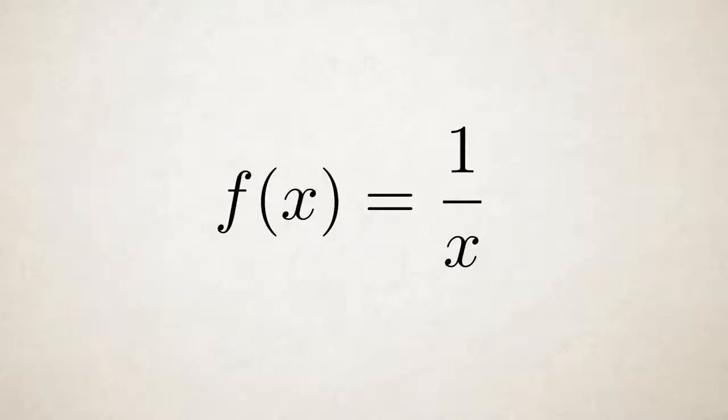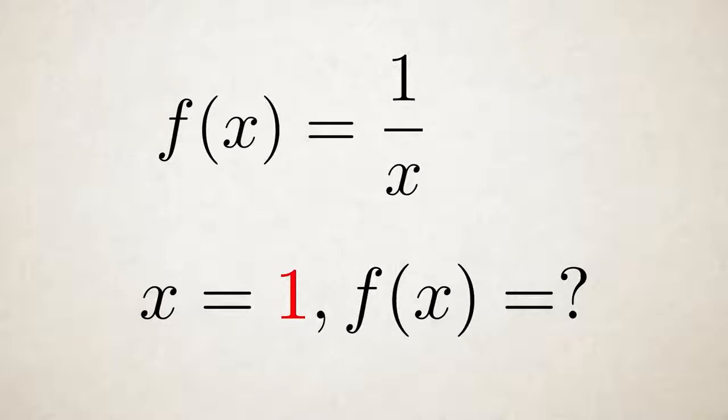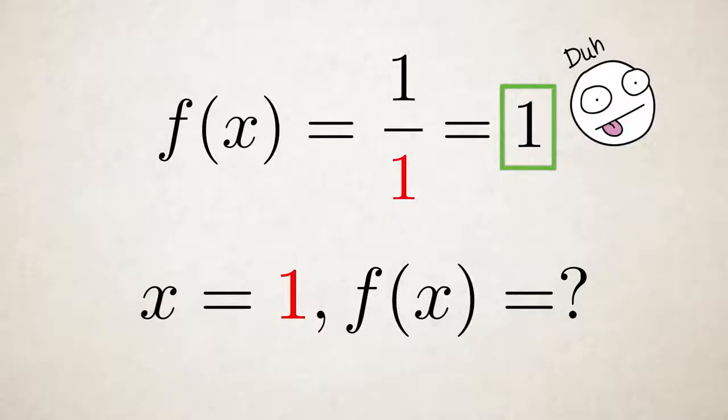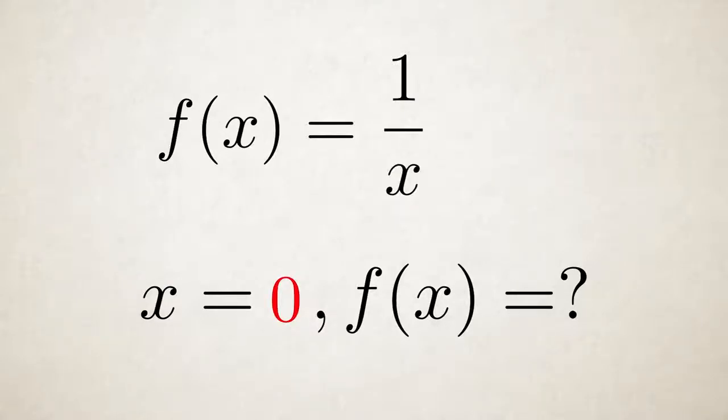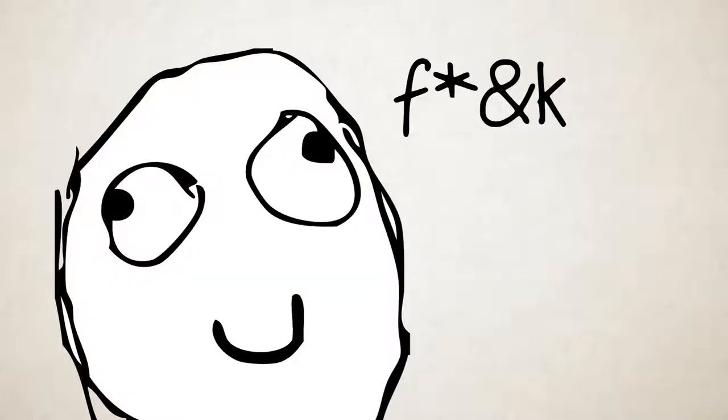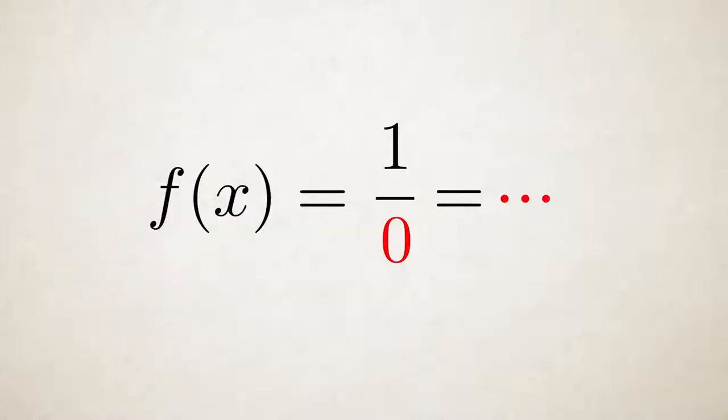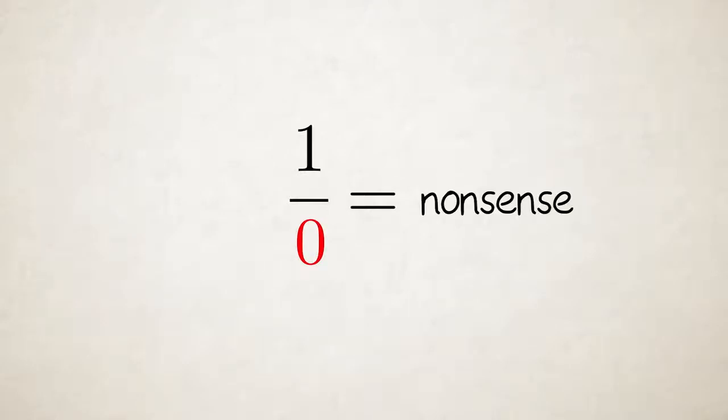Take this very simple function. When x is 1, what's the value of f of x? Okay, let's substitute. 1 over 1 is 1. Now, what happens when x is 0? Well, that's easy. Substitute and... The function has no solution because it doesn't make any sense. Because 1 divided by 0 doesn't make any sense.